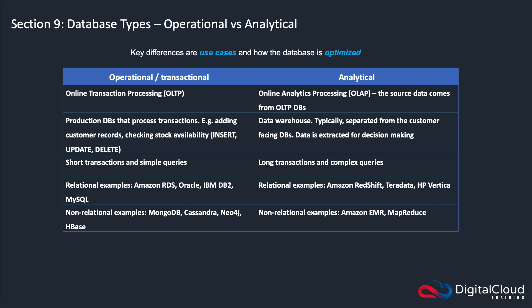When we say operational, we're talking about things like a transactional database that a website might have — where you go shopping and buy something, the customer information and the order get put into a database. That would be your operational database. Your analytical database is the one where you perform analytics, for instance at the end of the year, to find out what your customers' buying habits are. For operational transactional databases, this is called online transaction processing (OLTP), and for analytical databases it's known as online analytics processing (OLAP).